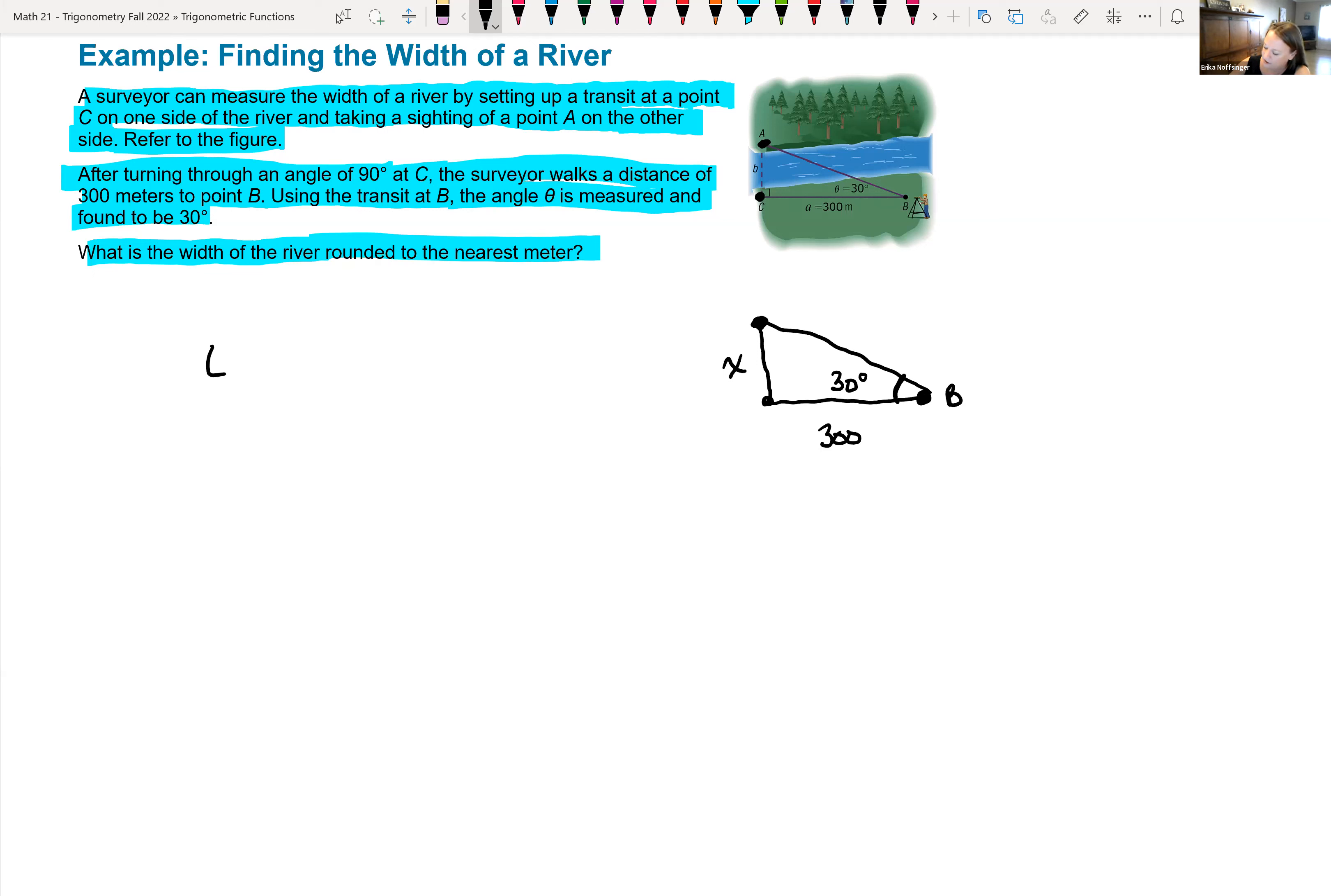So, tangent of 30 degrees, this is equal to the opposite side, which is x, all over the adjacent side, which is 300. So, we can get x by itself by multiplying both sides of our equation by 300. So, we get x is equal to 300 tangent of 30 degrees.